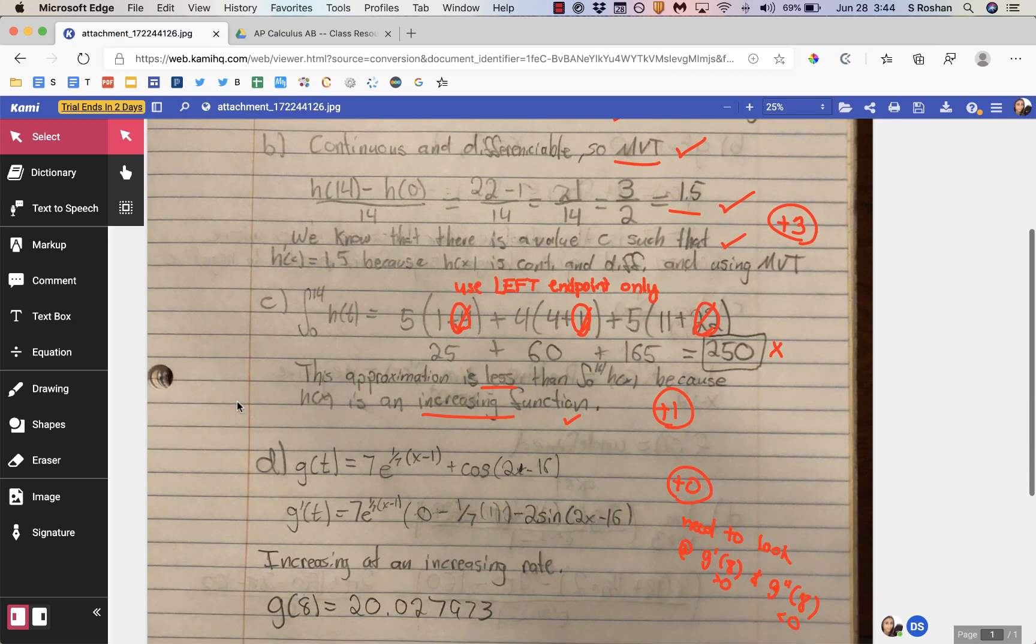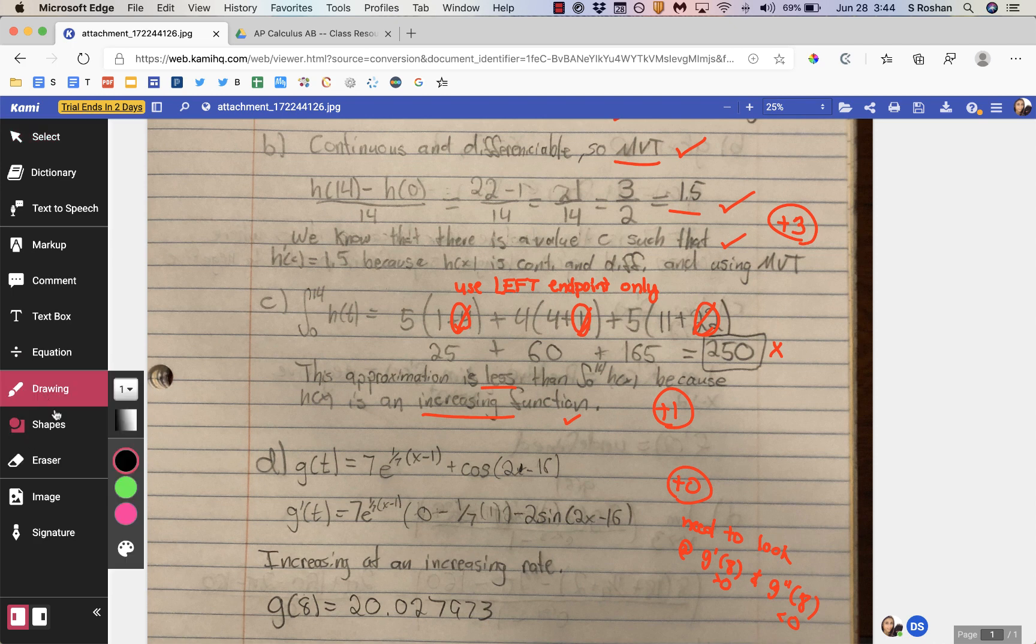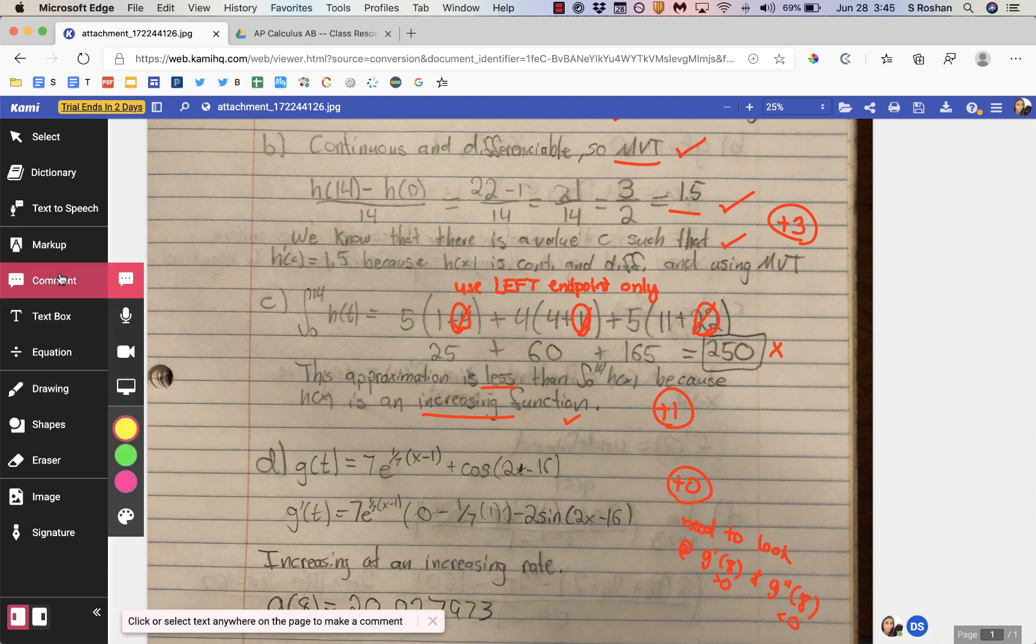When I open it with Kami, you'll see that I have all of these tools. I can do the drawing, which is what I typically do, and then I just write with my pen. You can also leave text box comments and point-and-click comments.